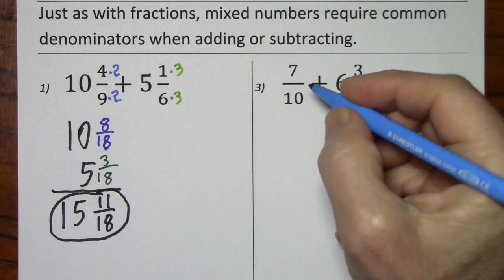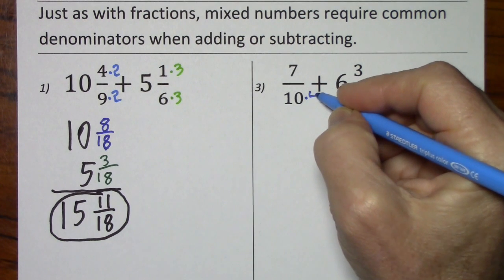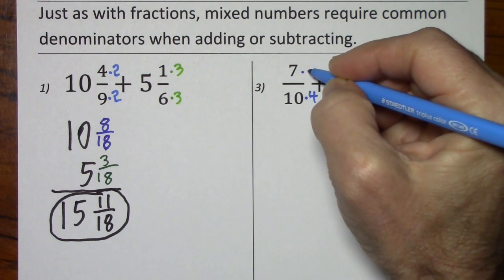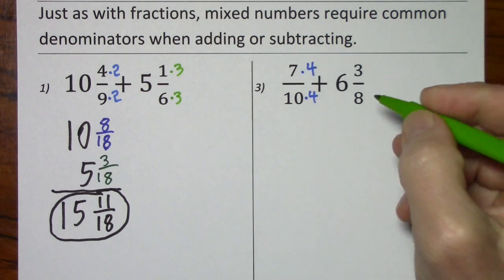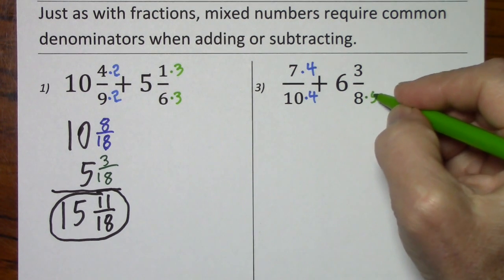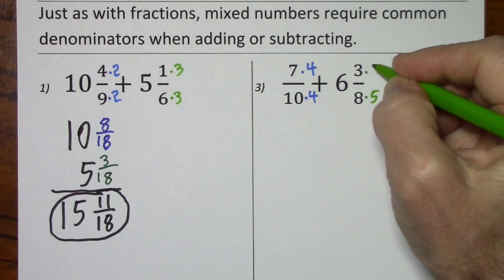To get from 10 to 40, you'll multiply by 4, do the same to the numerator. To get from 8 to 40, you multiply by 5, you do the same to the numerator.